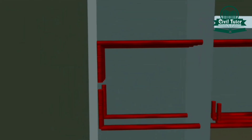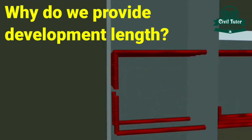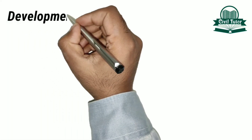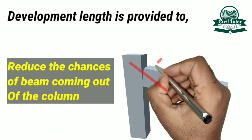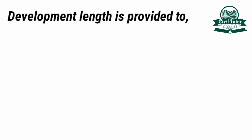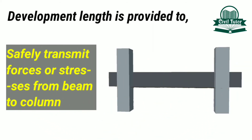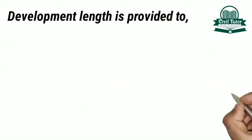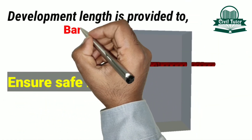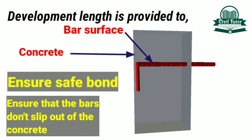Now the question arises: why do we provide development length? Development length is provided to reduce the chances of the beam coming out of the column. It is provided in order to safely transmit the forces or stresses from beam to column. It ensures a safe bond between bar surface and concrete, and ensures that the bars don't slip out of the concrete.